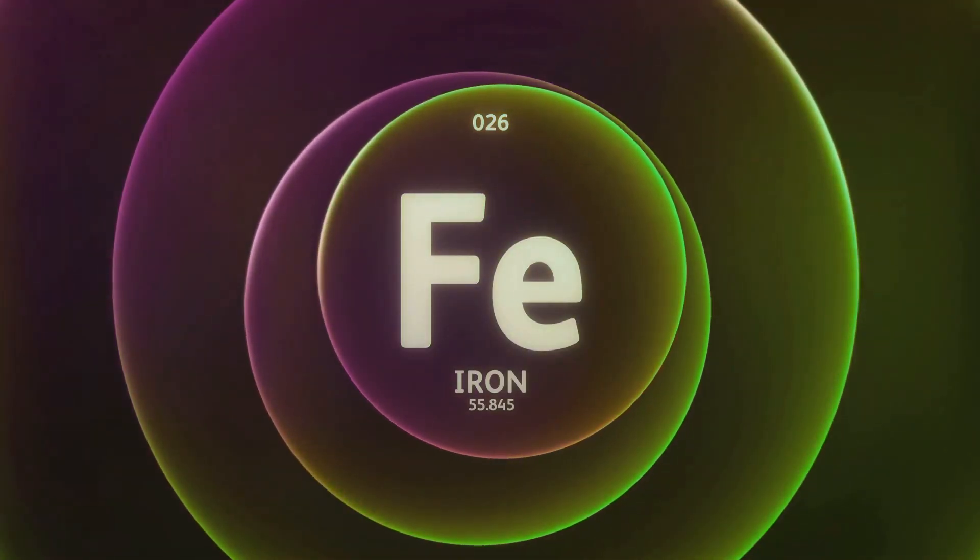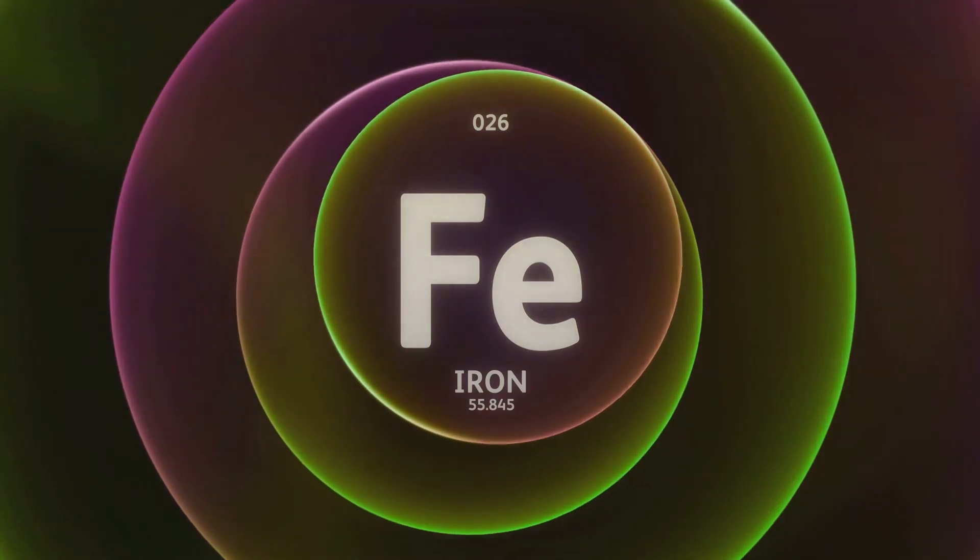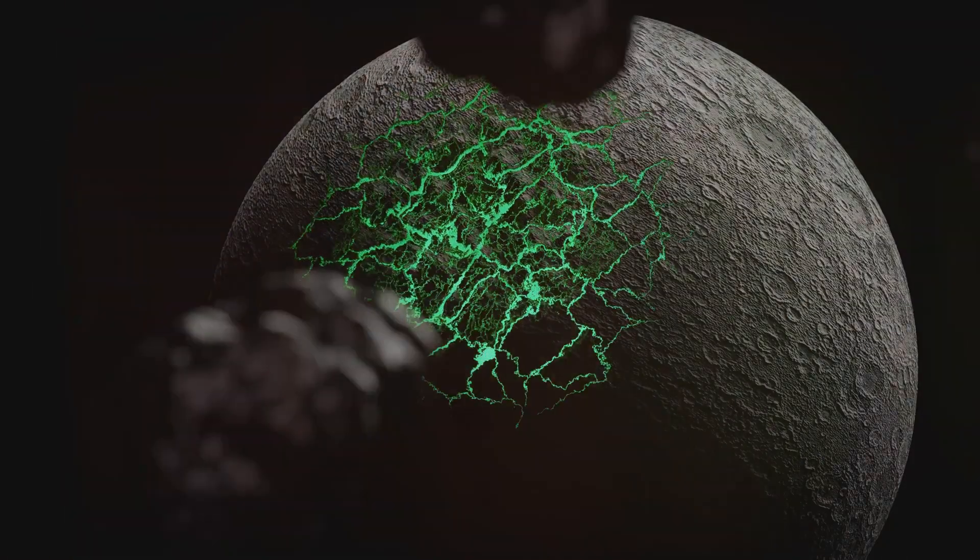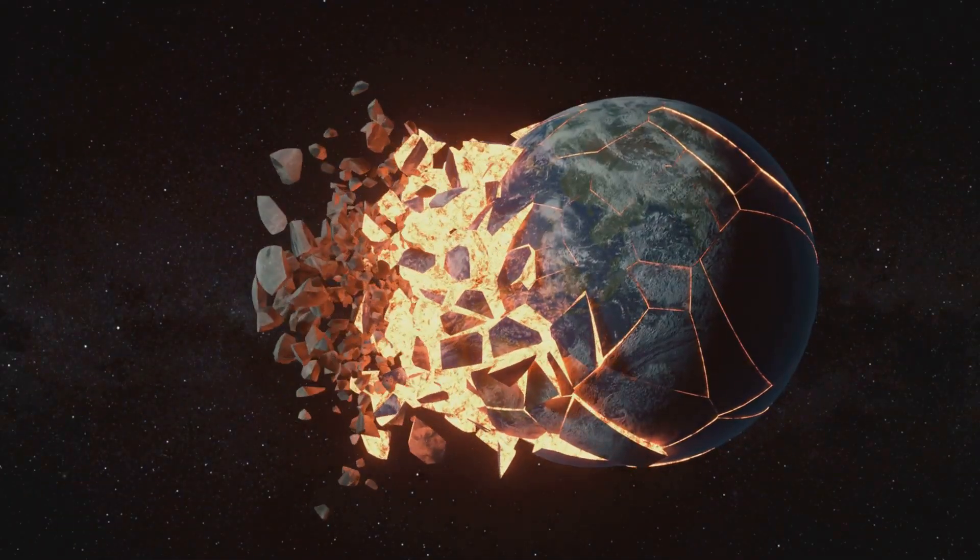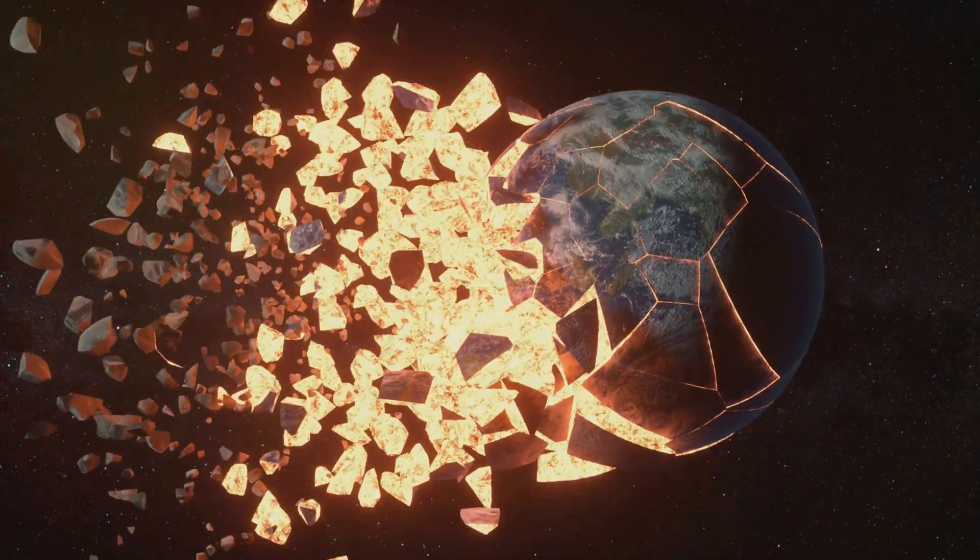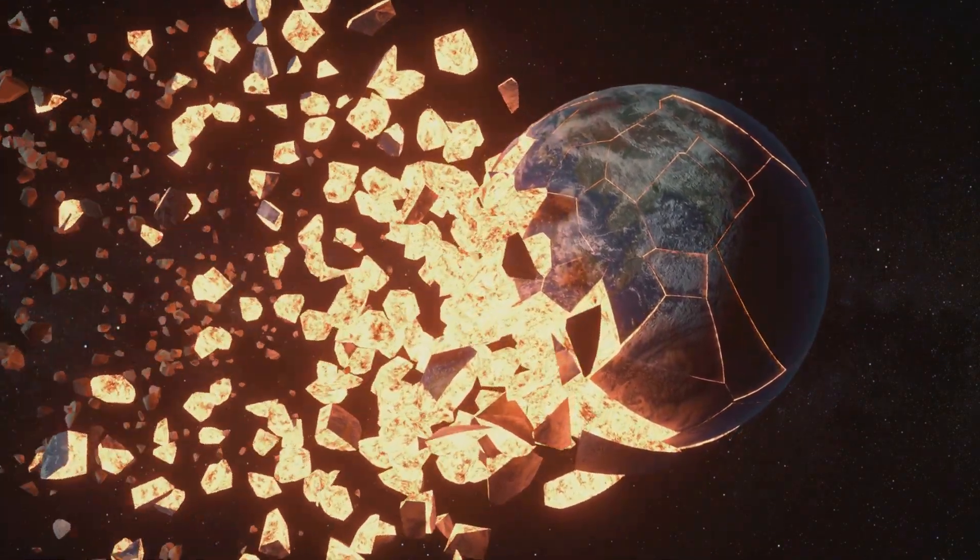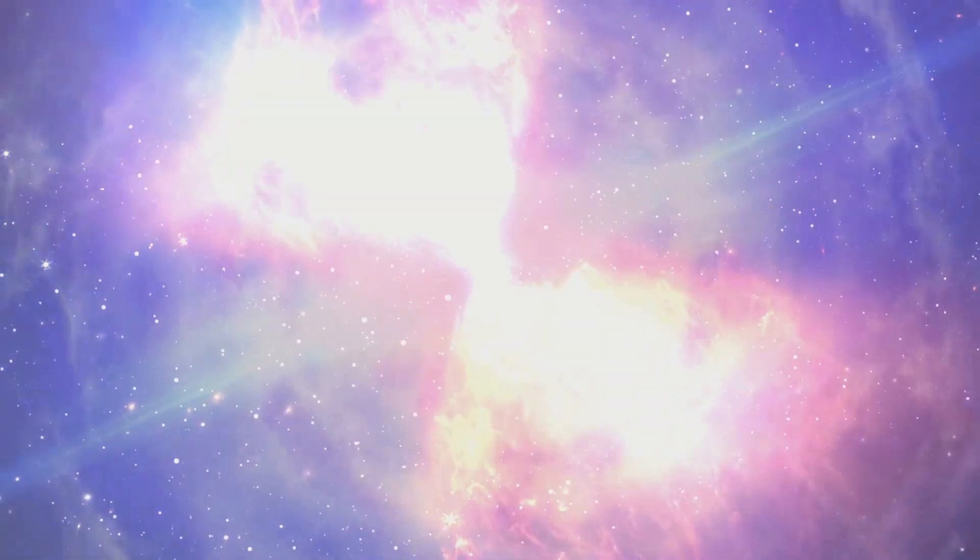However, iron is the end of the line for fusion in stars. Fusing iron requires more energy than it releases. So when a star's core is primarily iron, it can no longer support itself against gravity. The stage is set for a cataclysmic event that will forge the heaviest elements and scatter them throughout the cosmos.